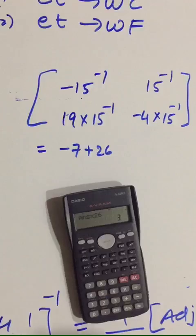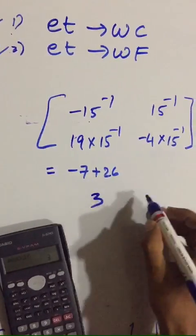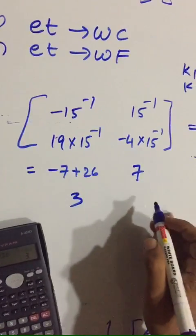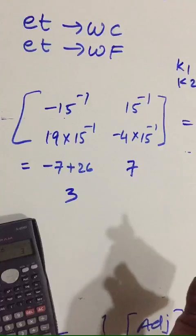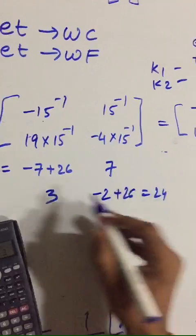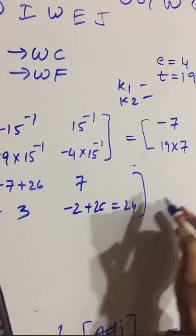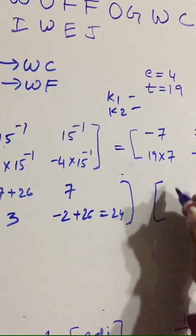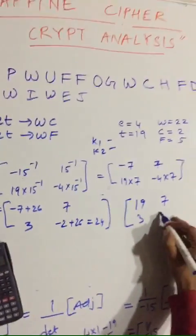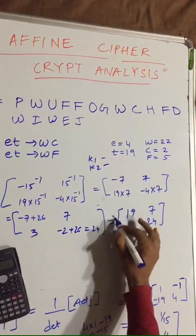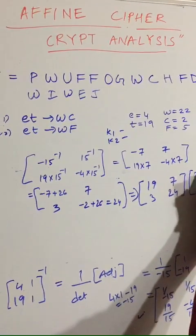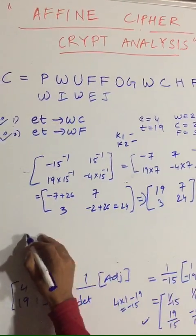Computing: −7 mod 26 = 19; 19·7 = 133 mod 26 = 3; 7 stays as 7; −4·7 = −28, and −28 + 26 = −2, then −2 + 26 = 24. So our inverse matrix is [19, 3; 7, 24]. Now multiply this by [22; 2].